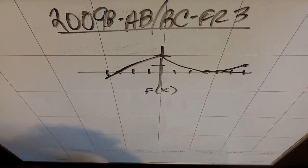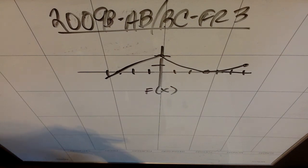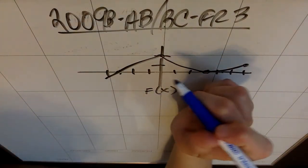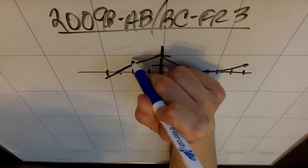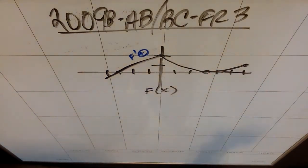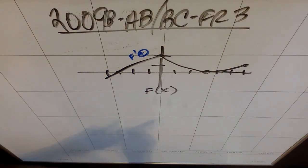Part A: Is f differentiable at x equals 0? Use the definition of the derivative with one-sided limits to justify your answer. The answer is definitely that it is not — you can see that because it has a point. The reason is that f prime is positive on the left side, and then over here f prime is negative.